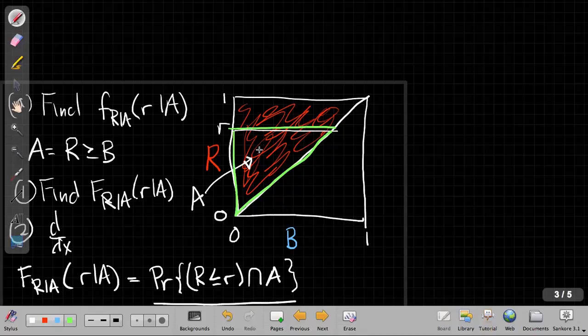So the area of this triangle gives me that probability. Well, this triangle is little r on each side. I've got R here and R here. So the area of this triangle is one half r squared.